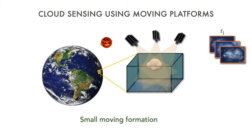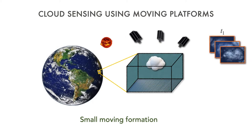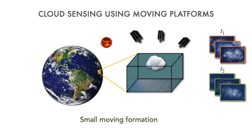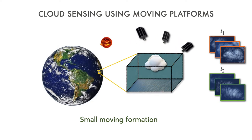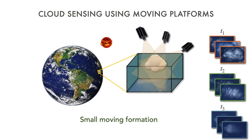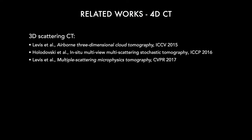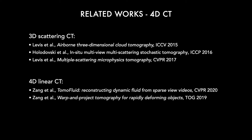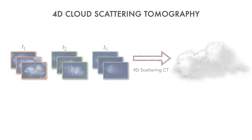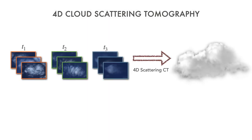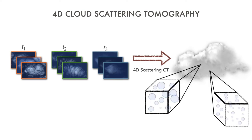We study here CT of clouds using a small formation of satellites in orbital motion. During orbital motion, an image sequence spans and samples a wide angular range. During this time, however, the clouds evolve and sunlight direction changes as well. State-of-the-art includes 3D scattering CT and 4D linear CT, but 4D scattering tomography, in both space and time, is novel.